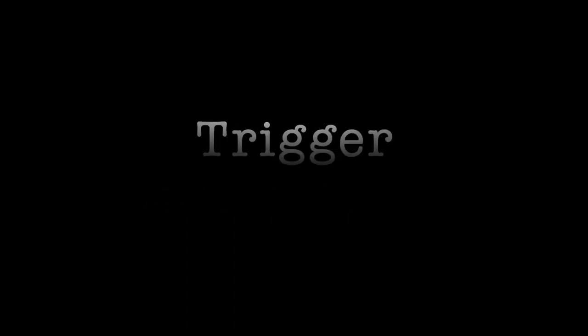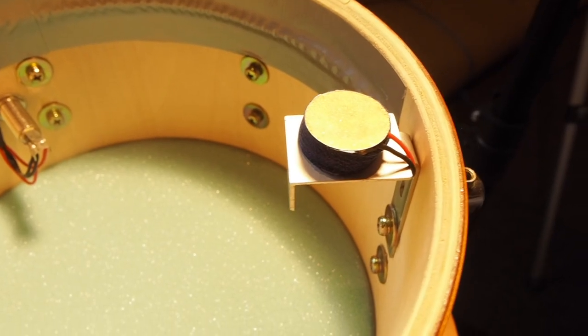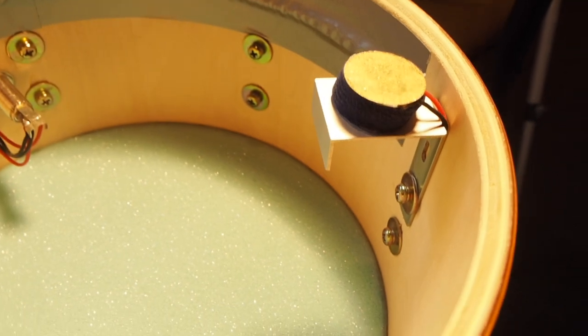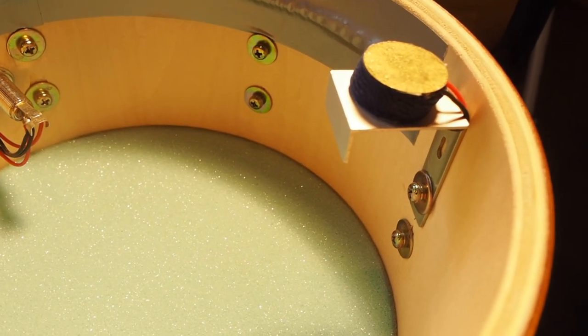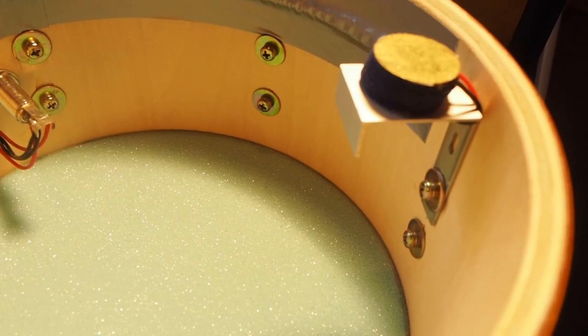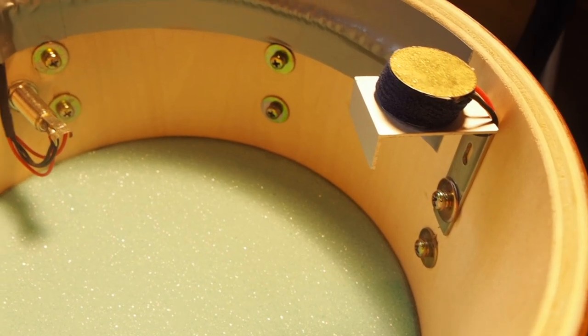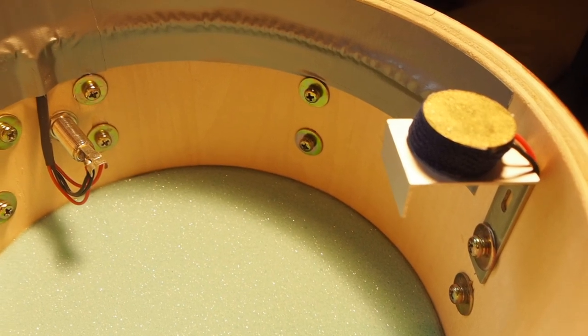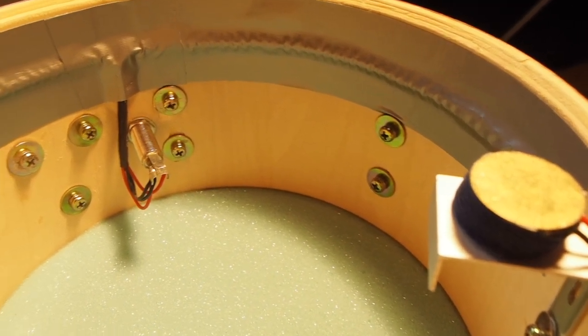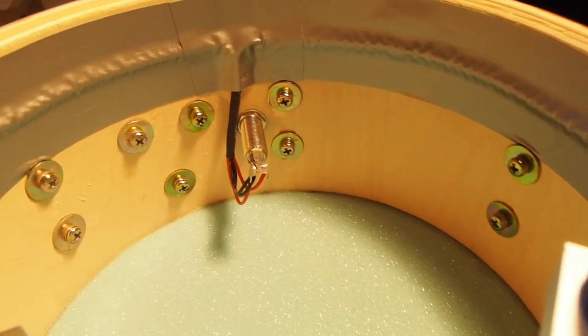So we'll now talk about trigger installation. Here you can see one of my drums and this is the head trigger attached to one of the lug screws using the L bracket. The wires are hidden under some duct tape.